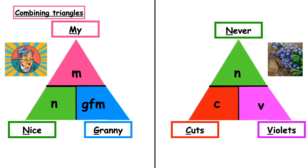In this lesson we are going to be looking at combining the triangles. So far we have looked at the mass triangle and the concentration triangle. The story to help us remember this is 'my nice granny never cuts violets'. If you need a recap you can look at the previous videos, and in today's lesson we are going to look at a number of past paper questions that ask us to combine the triangles.